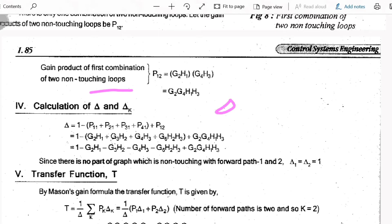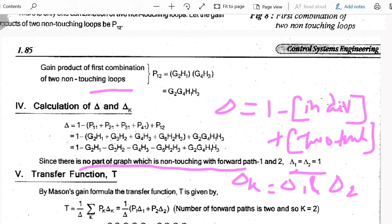Then calculate Δ. Δ is equal to 1 minus summation of individual loop gains plus summation of products of two non-touching loops. For that, substitute all the gain product values, then find Δk. Here Δk equals Δ1 and Δ2. Check if there is any part of the graph which is non-touching the forward path 1 and 2. In that aspect, Δ1 equals Δ2 equals 1.